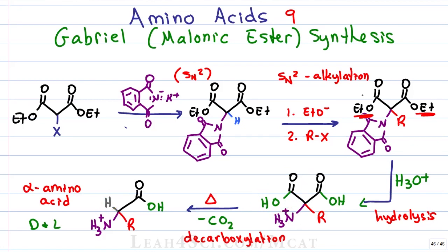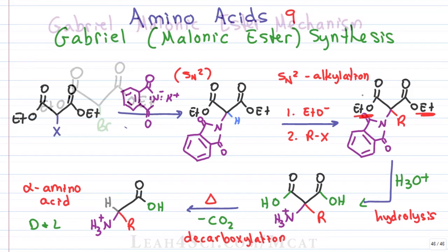Now let's take a look at key components of this mechanism. Keep in mind that for the MCAT, you simply want to understand why and how each step happens — you don't have to worry about being able to repeat and write it out step by step. If you're required to know this for your class, obviously go through and draw it out again and again until you have it memorized.